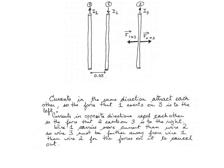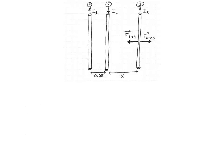The force that 1 exerts on 3 is an attraction, and the force that 2 exerts on 3 is a repulsion. We also have to note that wire 1 carries more current than wire 2, so wire 3 must be further away from wire 1 than from wire 2 so that the forces can cancel. I'll call the distance between wire 2 and wire 3, x.